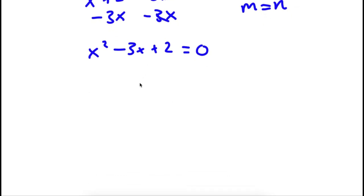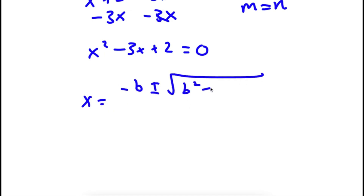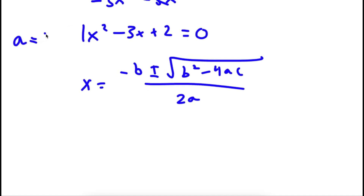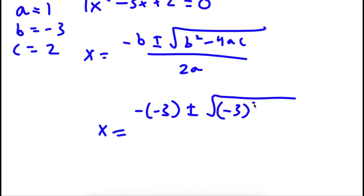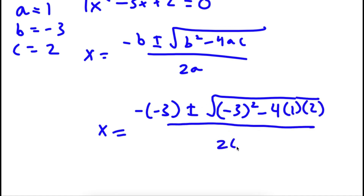Now I have a quadratic equation, and to solve this I'm going to be using the quadratic formula, which is negative b plus or minus the square root of b squared minus 4ac, all over 2a. So in this case, a is equal to 1, b is equal to negative 3, and c is equal to 2. So I have x is equal to negative negative 3 plus or minus the square root of negative 3 squared minus 4 times 1 times 2, all over 2 times 1.